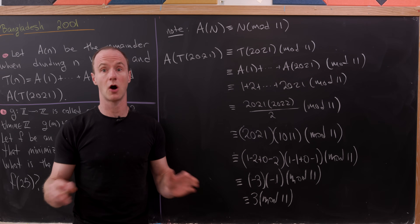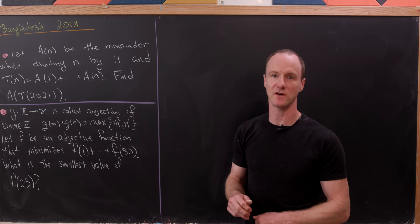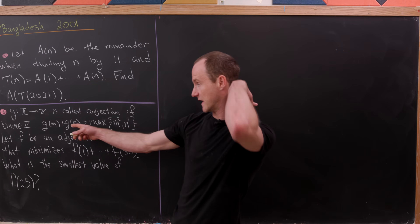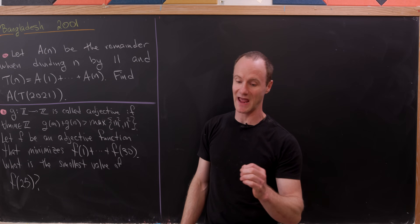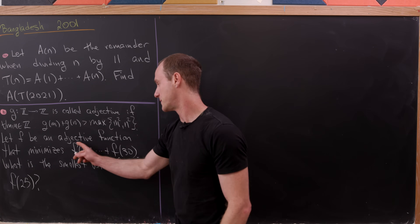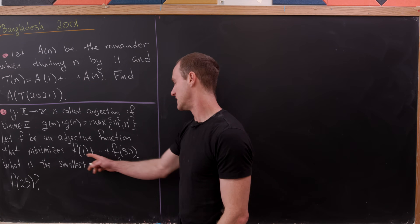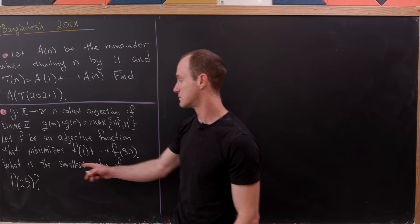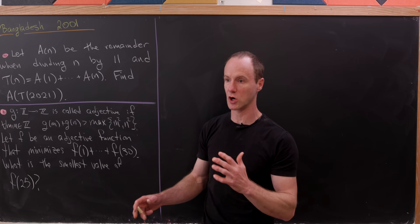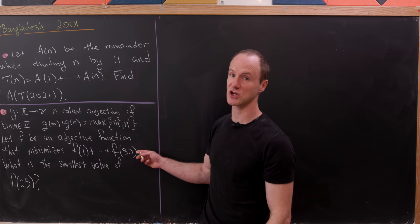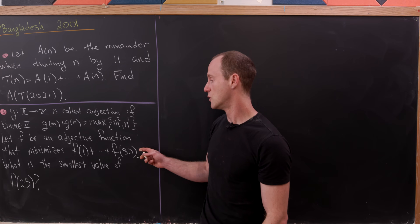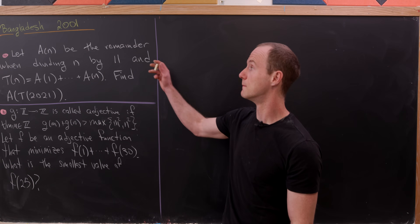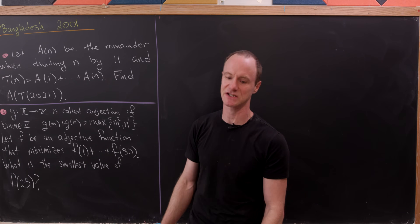Now let's move on to the second, harder problem. For our second problem, we need something called an adjective function, defined for this problem as a function from Z to Z satisfying the inequality g(m) + g(n) > max(m², n²). We let f be an adjective function that minimizes the sum f(1) + f(2) + … + f(30), and our goal is to find the smallest possible value of f(25). This problem is much harder — it's the next-to-last problem on the exam.